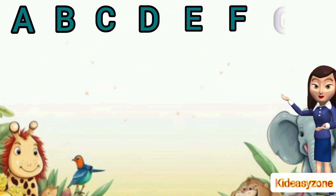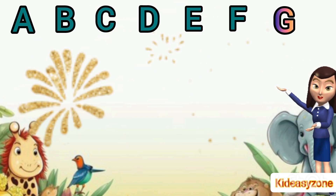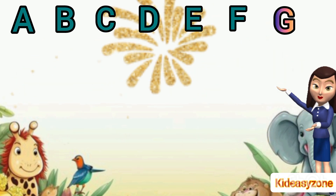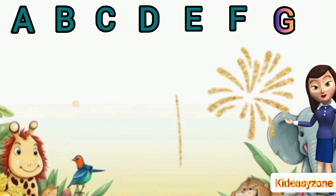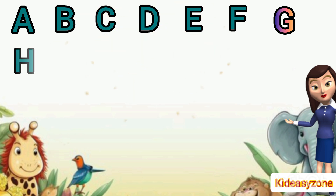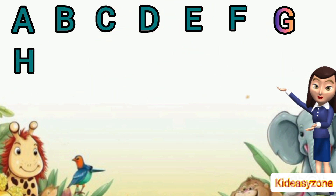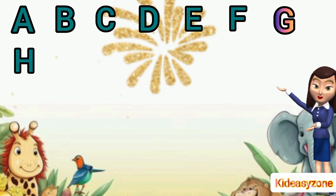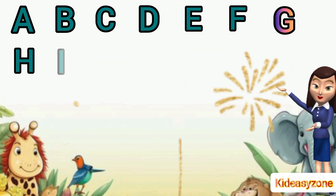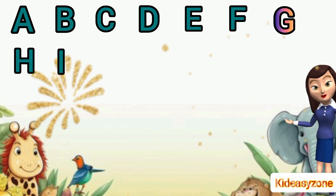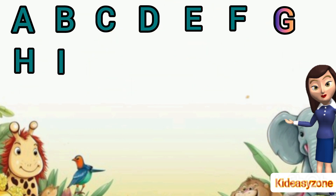A is for fish. G is for grapes. H is for hen. I is for ice cream.